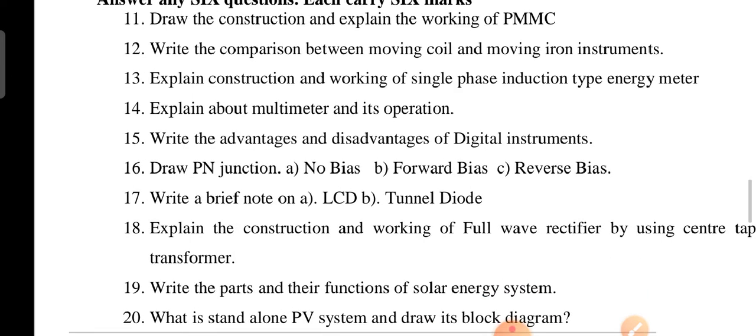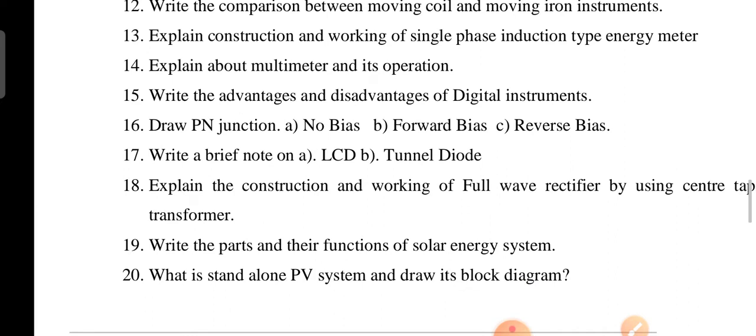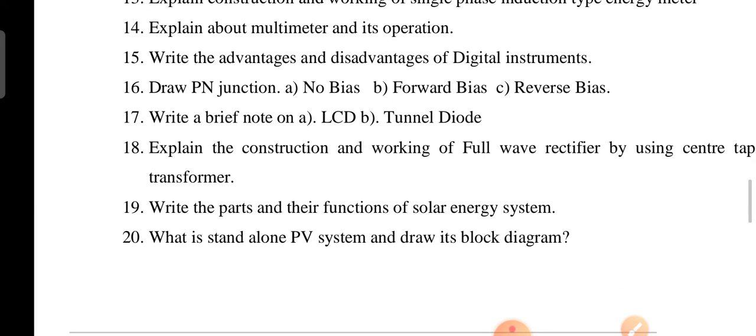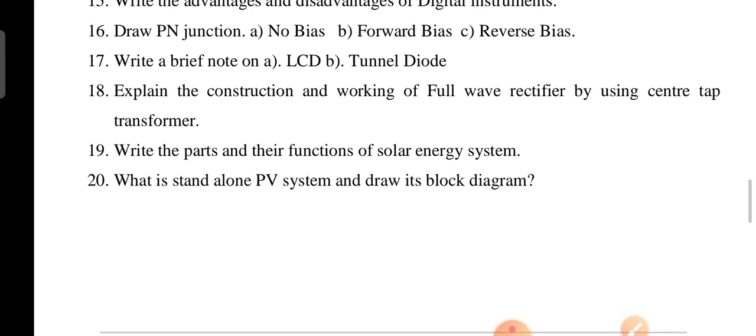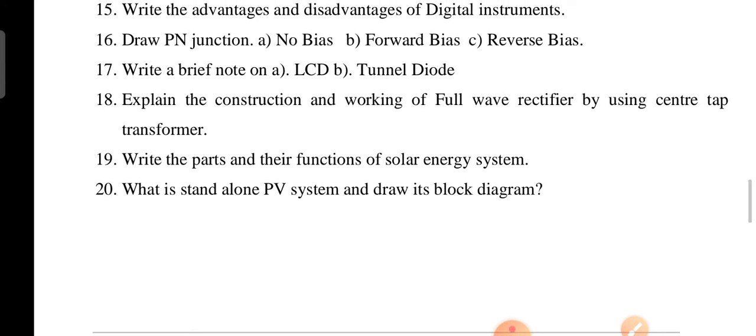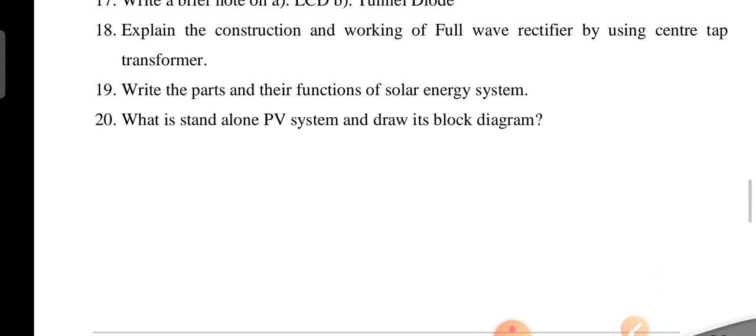Section B continues: no bias, forward bias, reverse bias of PN junction. Write brief notes on LCD and tunnel diode. Explain construction and working of a full wave rectifier using a center tap transformer. Write the parts and their functions of the solar energy system. What is an off-grid PV system and its drawbacks?